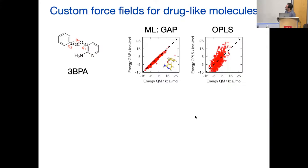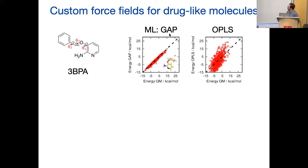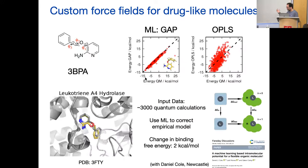Here's an example of doing similar things to molecules. Here's the same molecule I showed you before — with the empirical model which is not very good. You put the machine learning model on — SOAP-GAP, that's Gaussian Approximation Potential — and the energy-energy correlation becomes much better, and you can go use it for something useful.